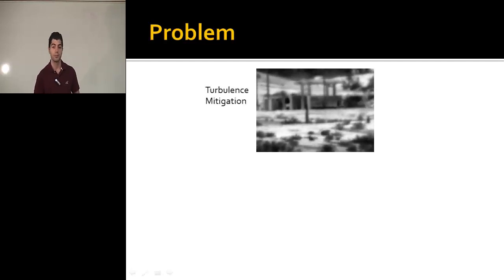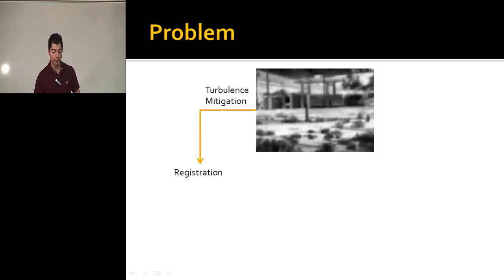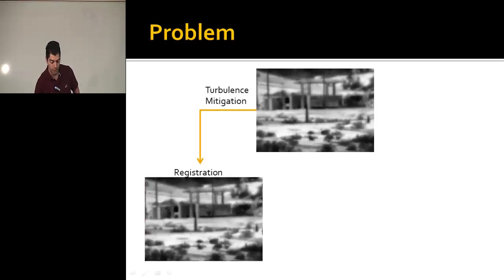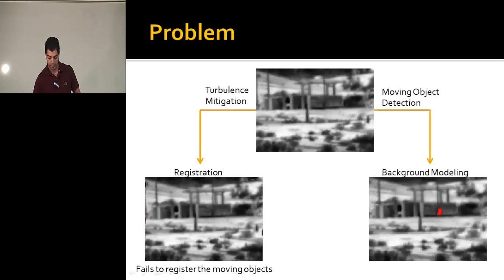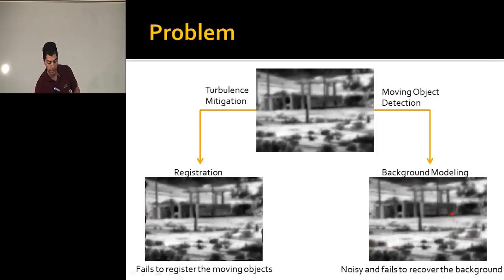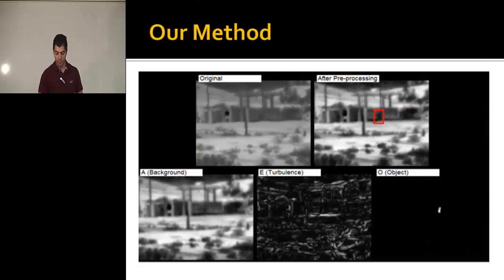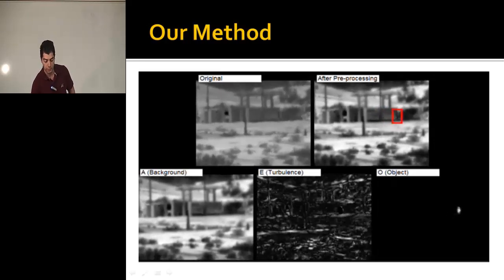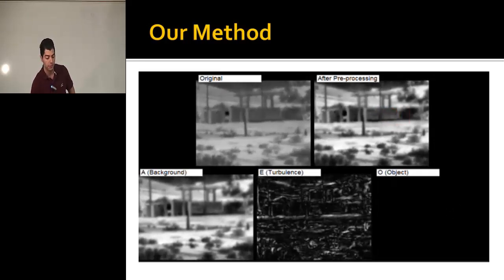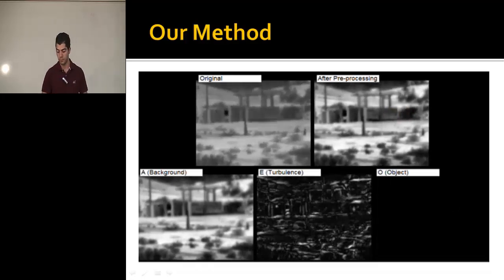The first problem is turbulence mitigation, where we want to reduce the turbulence in the sequence. Typically people use registration methods, but the problem is that registration fails on the moving object and introduces artifacts. We are also interested in moving object detection, where background modeling is noisy and cannot recover the original background. We propose a method which decomposes the sequence into three components: the object, the turbulence, and the background, solving both problems concurrently.